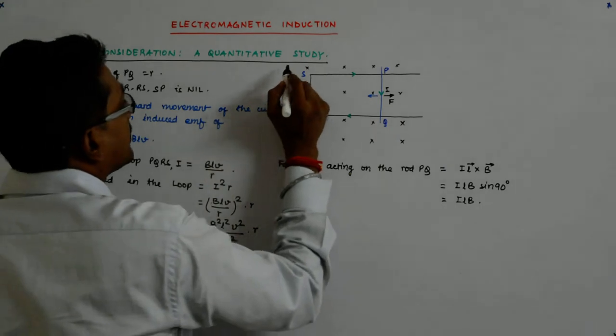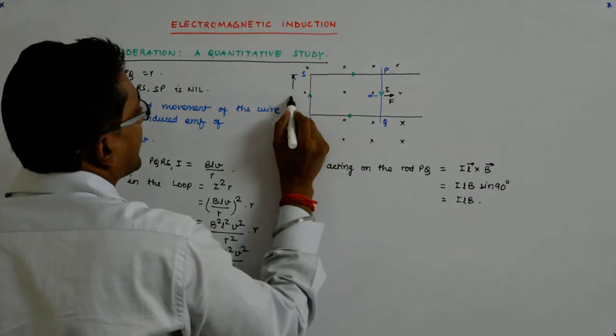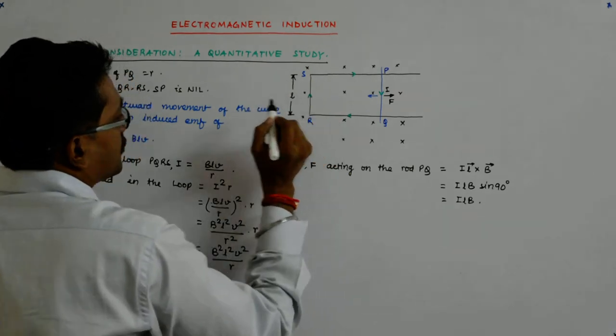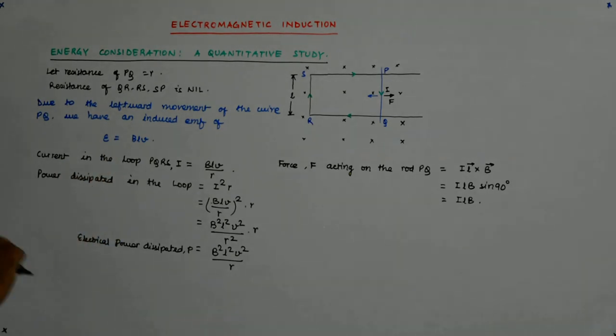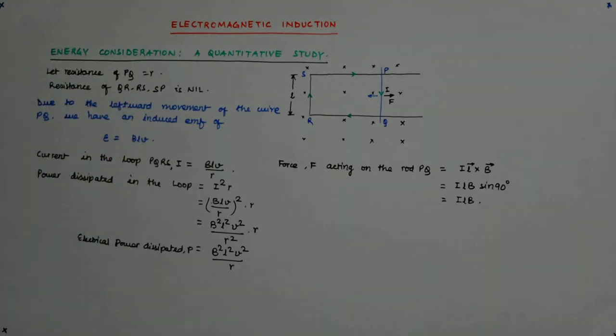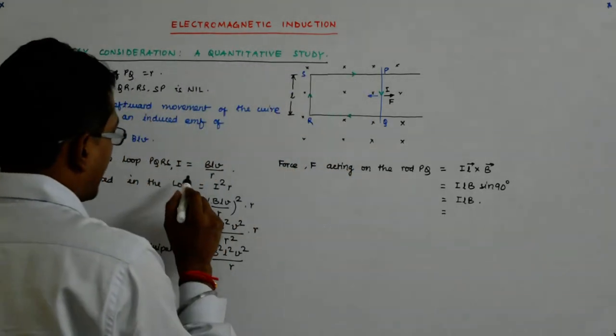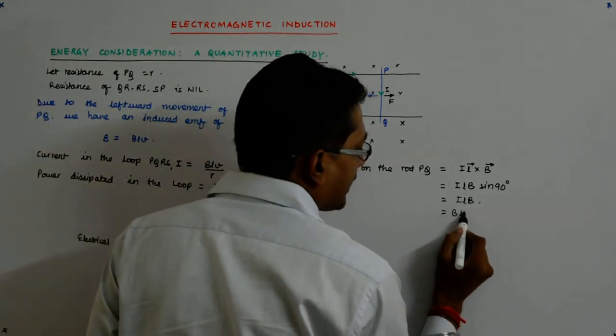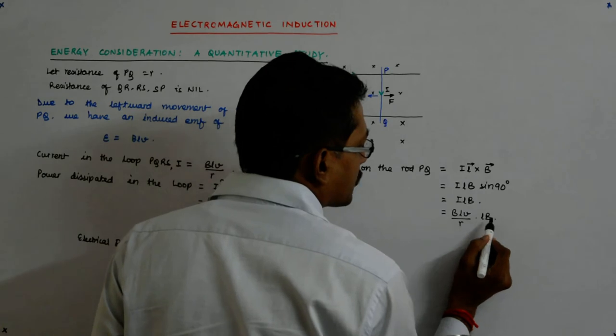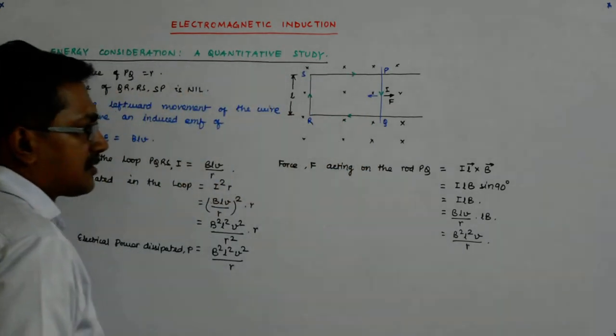The length here is incidentally the same as L that we had kept. Otherwise, L would have represented the length which could be some other literal. So, it is I L B. And that is equal to, what is my I? I is B L V by R.